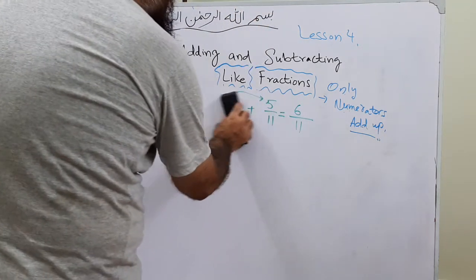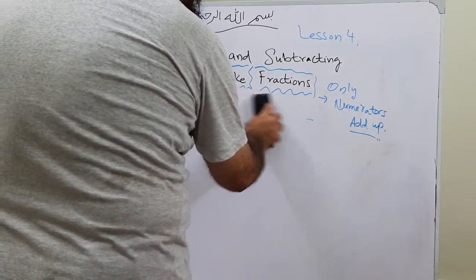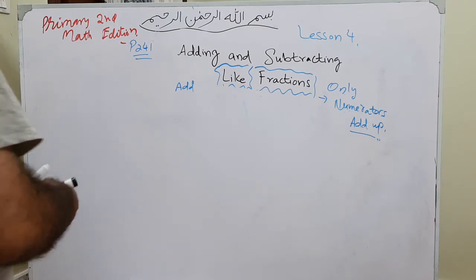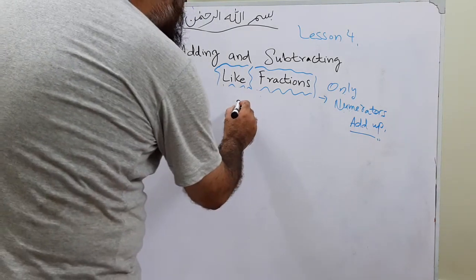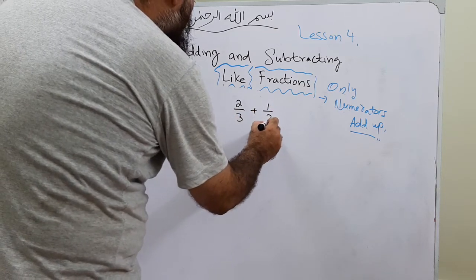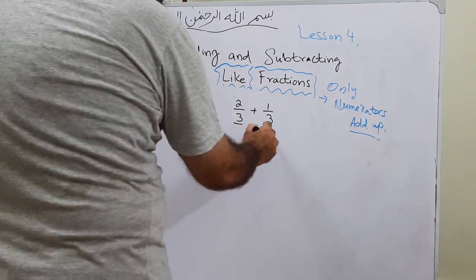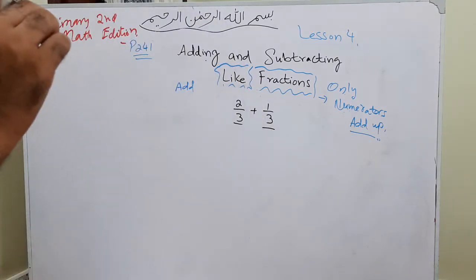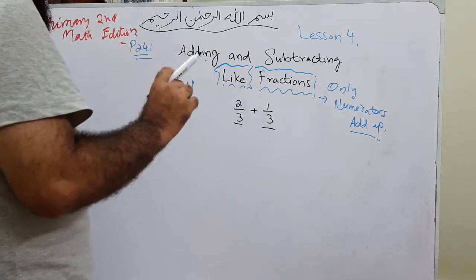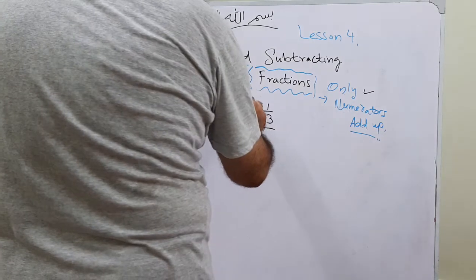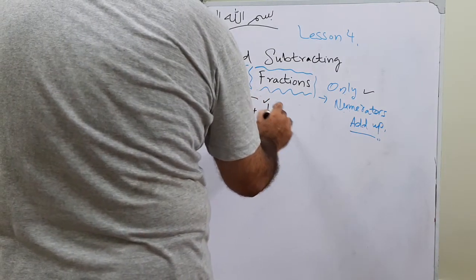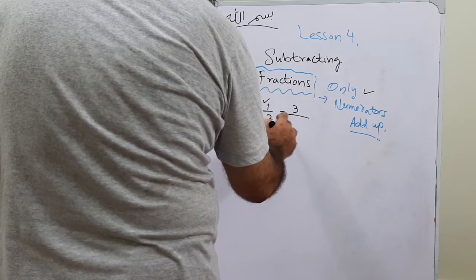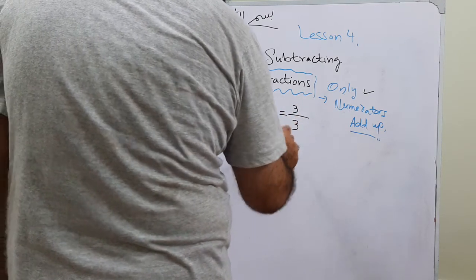These are very simple questions because these are adding up like fractions. Now part e: 2 over 3 plus 1 over 3. Denominators are the same, so only numerators add up. 2 plus 1 is 3, and the denominator comes once — 3 over 3.